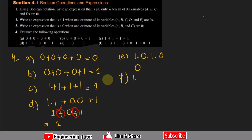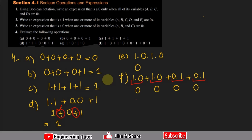In part f: 1·0 + 1·0 + 0·1 + 0·1. Evaluating each AND term first: 1·0 = 0, 1·0 = 0, 0·1 = 0, 0·1 = 0. Then performing the OR: 0 + 0 + 0 + 0 = 0. Since all operands in the OR are 0, the final answer is 0.